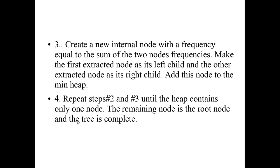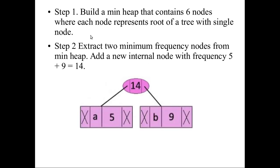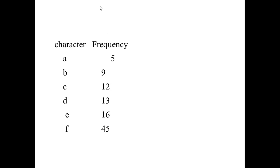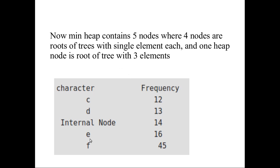As only one node remains, the heap at the last step should have only one node. Here is the example: characters a to f are given with their corresponding frequencies. First step — build the minimum heap containing six nodes where each node represents the root of a tree with a single node. Step two — extract the two minimum frequencies from the heap. The minimum frequencies are 5 and 9. Five is the minimum so it goes to the left side, nine goes to the right side, and their sum creates an internal node with frequency 14.